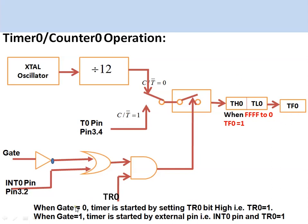When C/T-bar equals 1, the timer is configured as a counter and will count pulses from the external application connected to pin P3.4. To start the counter, the TR0 bit should be 1 and the GATE bit should be 0. The TH0 and TL0 registers then start incrementing based on the external pulses.